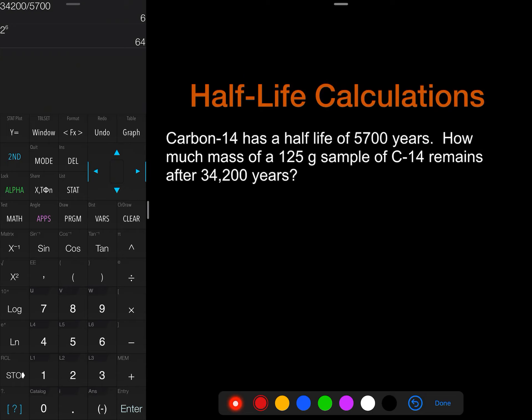All right, the last type of problem that we generally tend to see with this is one where it's asking us for the amount of mass or the amount of sample that remains. And this is actually the same as the last situation where we have 34,200 years. So we already did n equaled 6, right? We already had that from the last example.